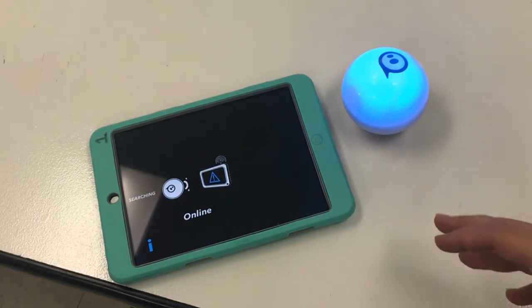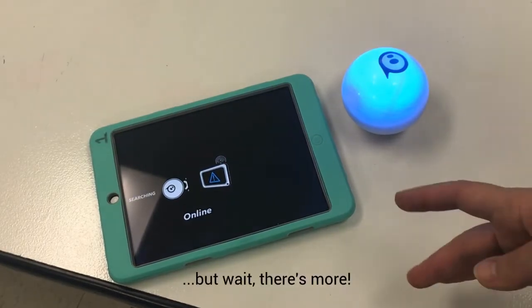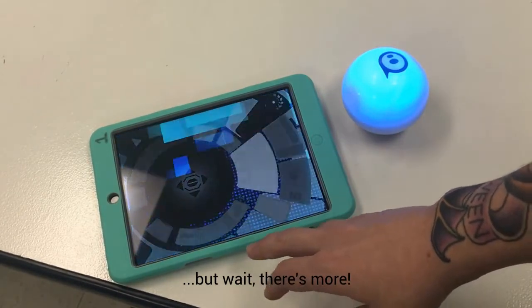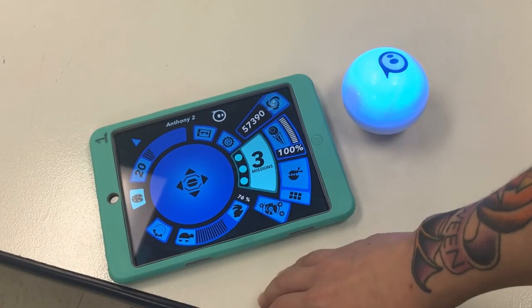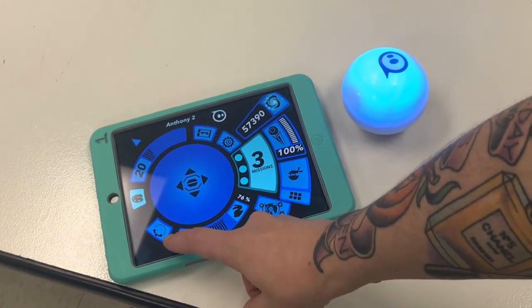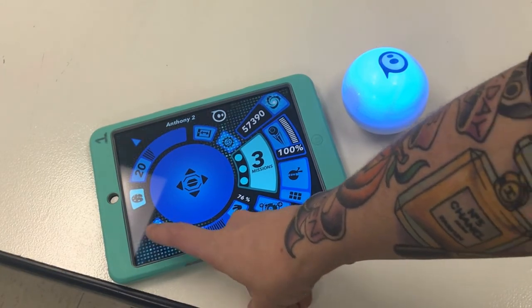Now before you just start driving your Sphero around, there's one more thing that you need to know, and that is how to calibrate your Sphero. So I'm going to go to play, and no matter what app I am using for the Sphero, it has a button that looks like this—it's a circle usually with a little dot or some arrows.